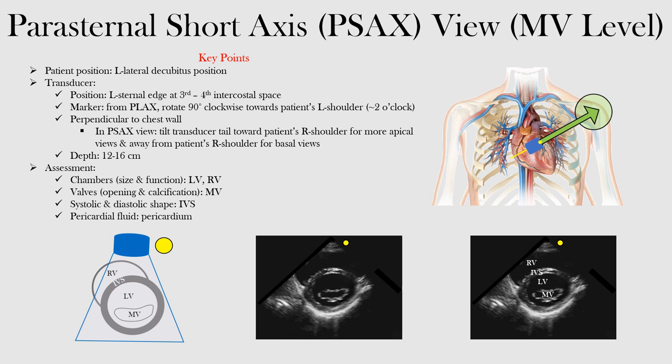The patient position is the left lateral decubitus position. You're going to put the transducer in the same position as when looking at the aortic level — at the left sternal edge at the third or fourth intercostal space.